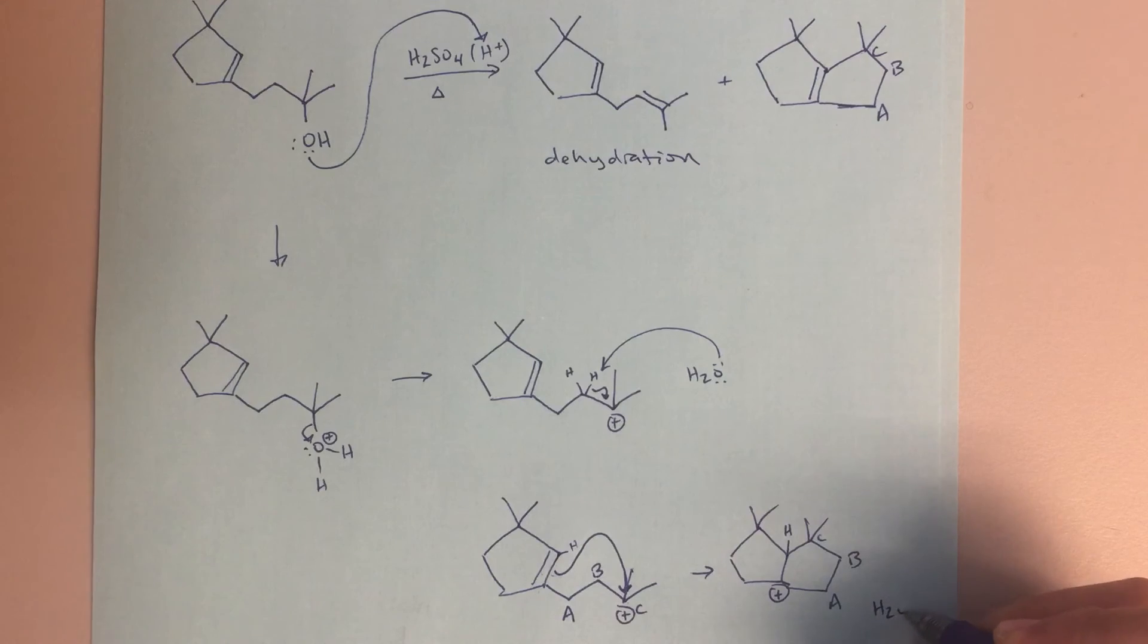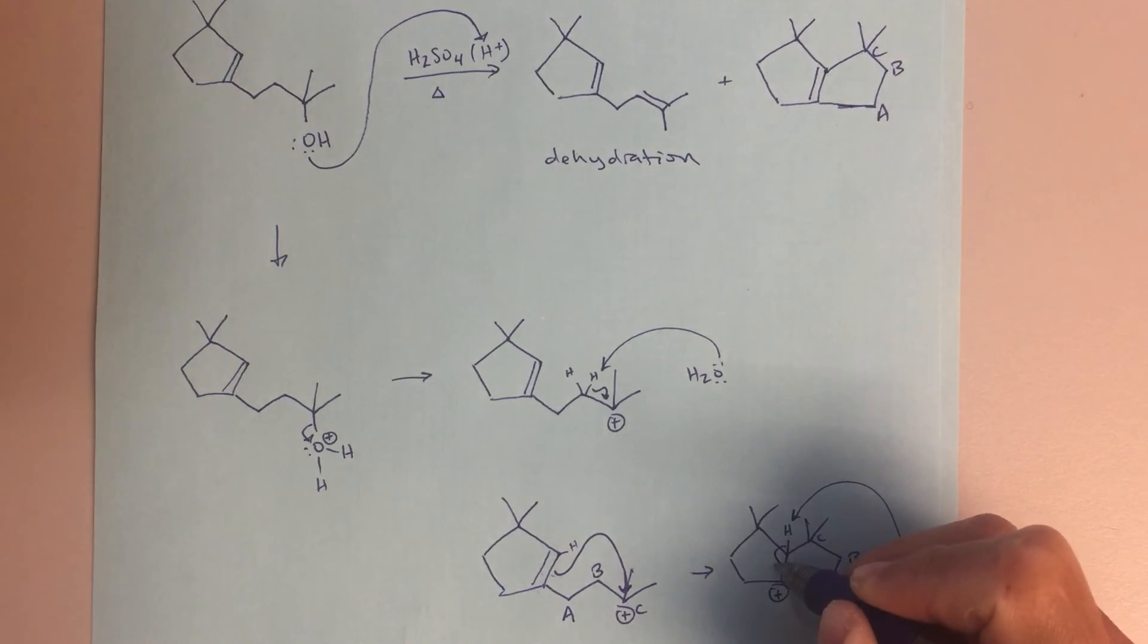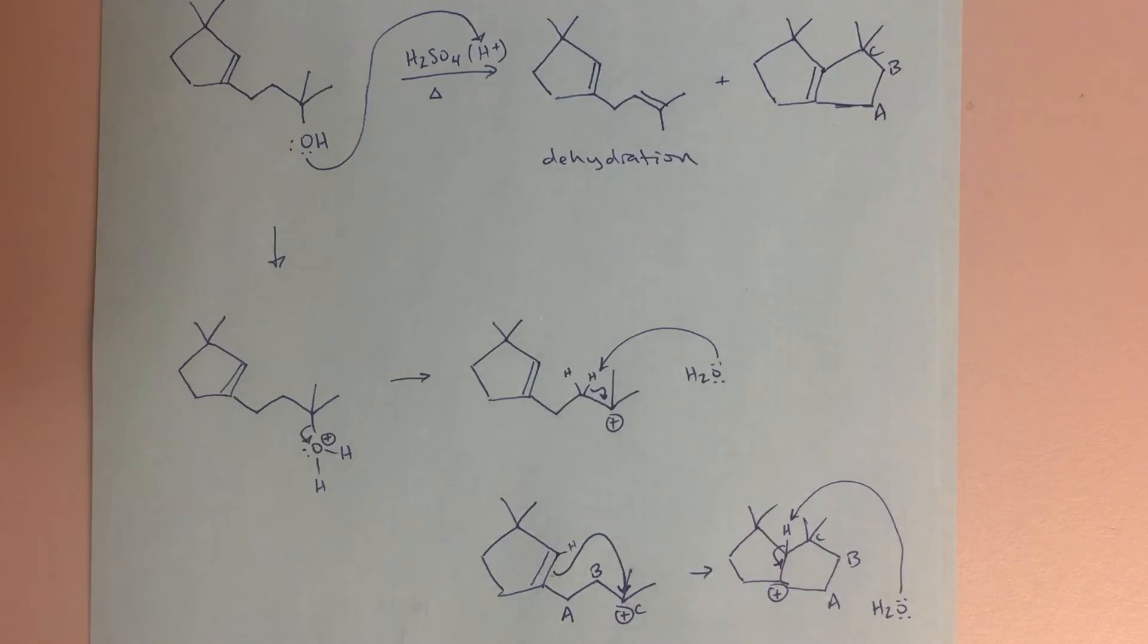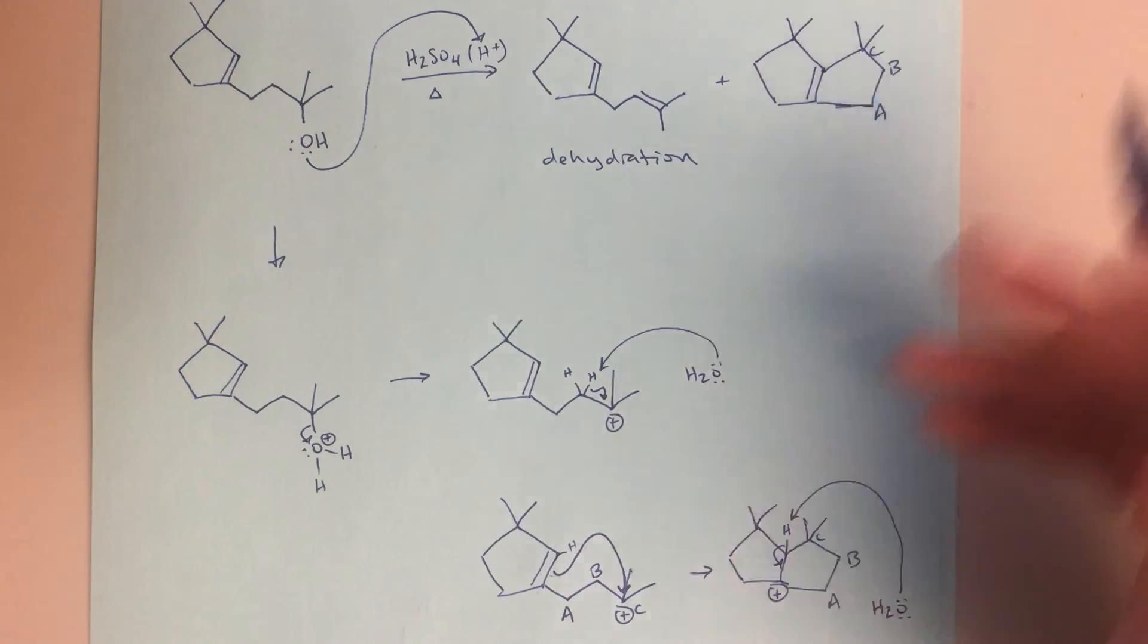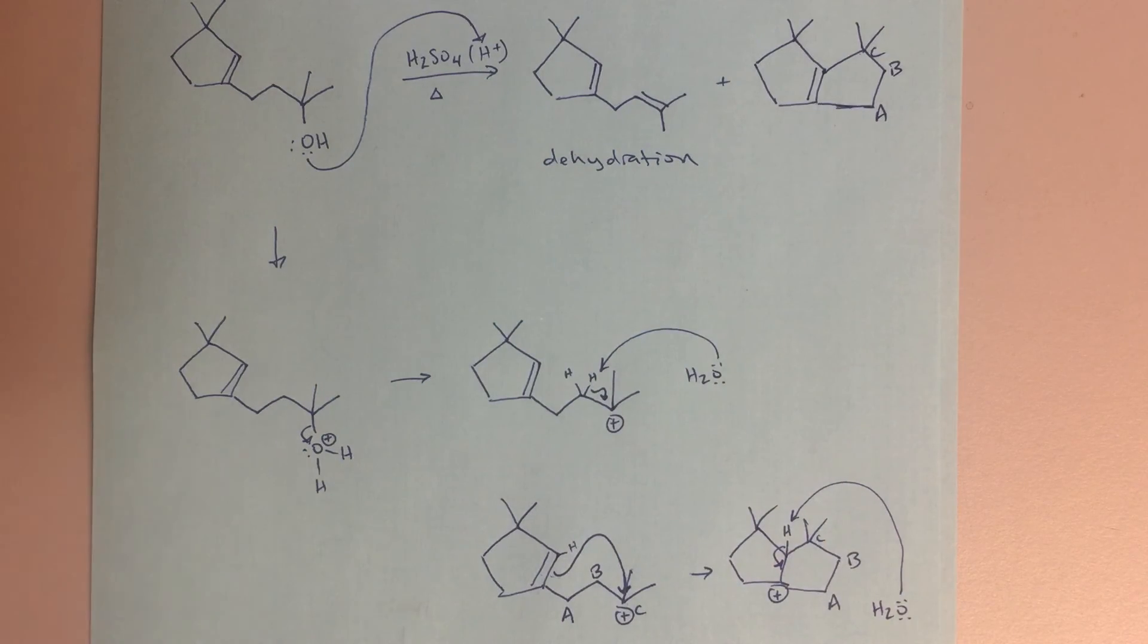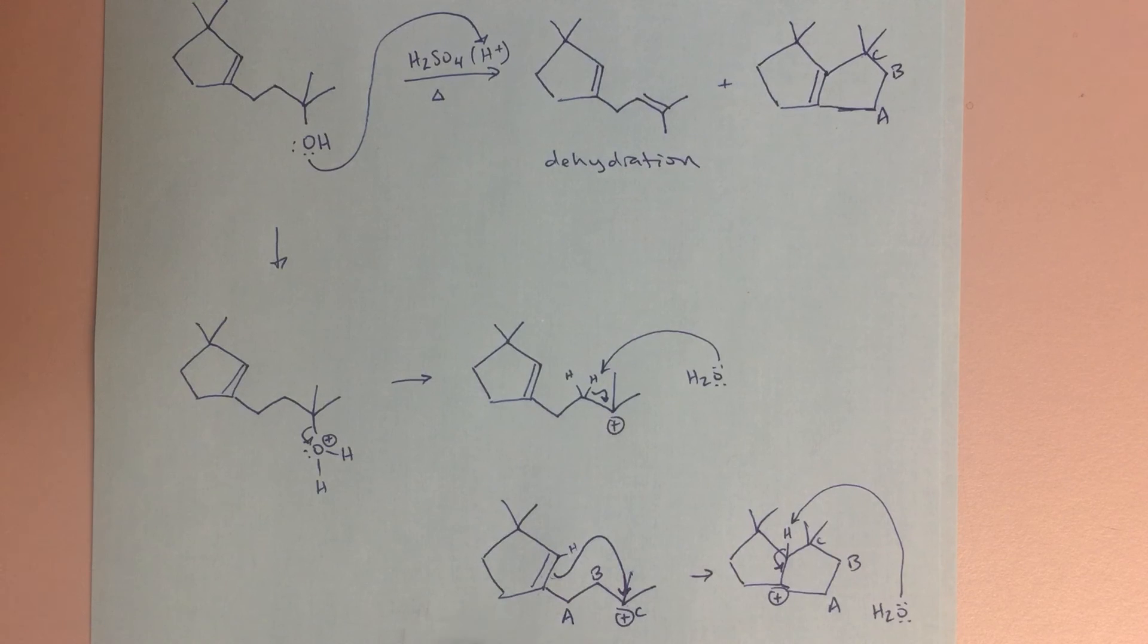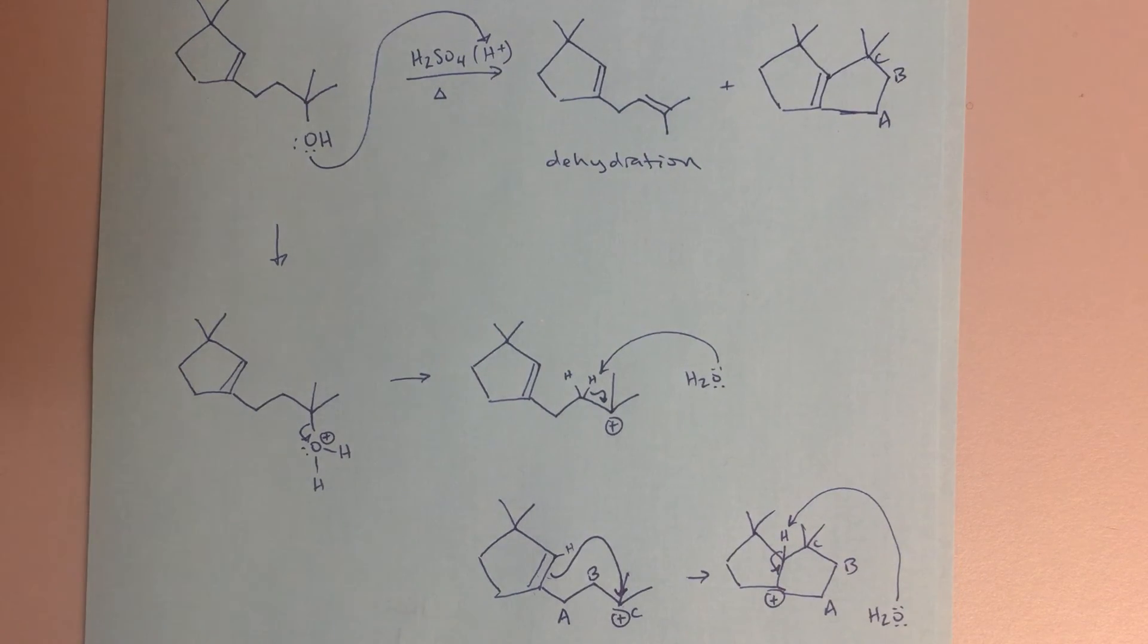And then to get to my final product, I'm going to again do that elimination with water to reform that double bond. So forming that double bond here is going to get me to my final product that I want. So this one is definitely a little tricky, but you know, sort of going through it stepwise, thinking about, well, where are these carbons coming from? Where are the bonds coming from? That's going to be the key as we move forward. All right. Hopefully that helps. And if you have any questions, please let me know.